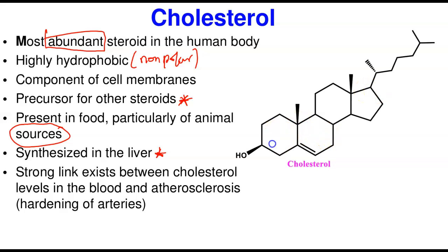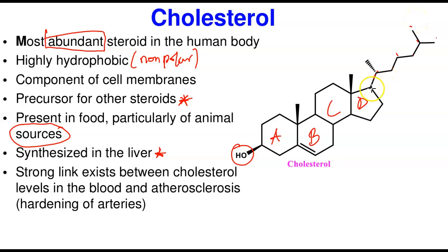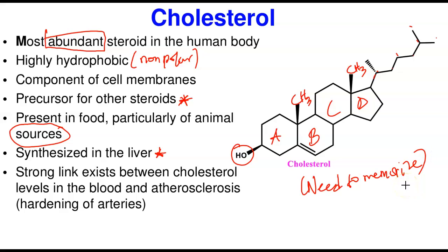The structure of cholesterol has the basic A, B, C, D steroid nucleus. It has an OH group at one point, a side chain, and methyl groups at specific positions. For assessment, you need to memorize the structure of cholesterol — that is the only structure I will ask you to memorize. You should be able to label parts of the cholesterol structure.